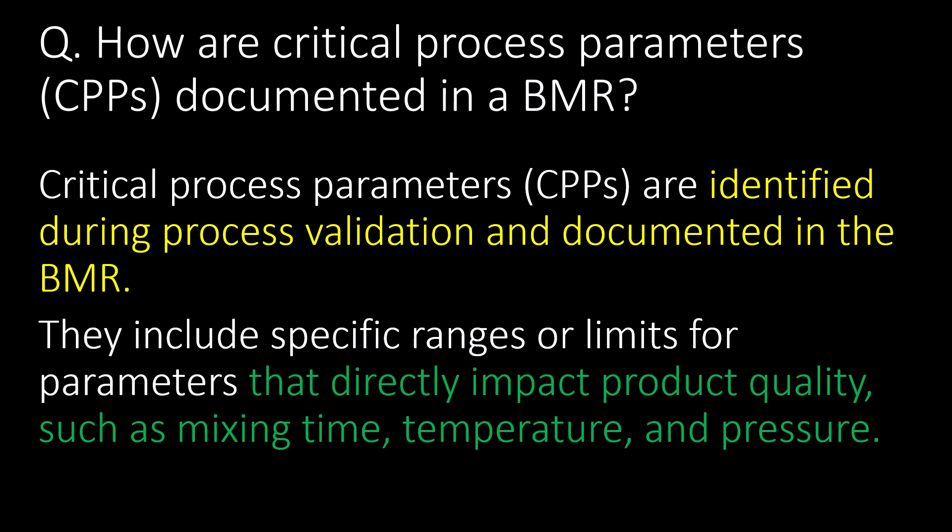How are critical process parameters (CPPs) documented in a BMR? CPPs are identified during process validation and documented in the BMR. They include specific ranges and limits for parameters that directly impact product quality, such as mixing time, temperature, and pressure.